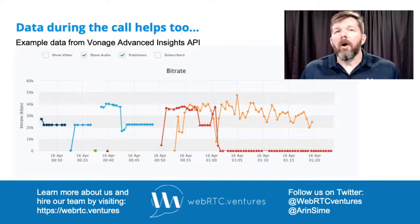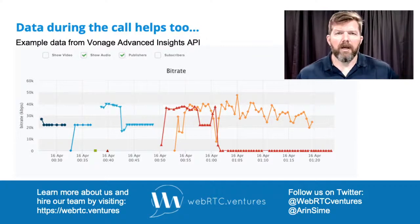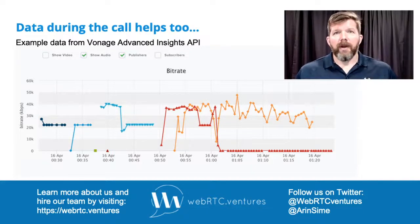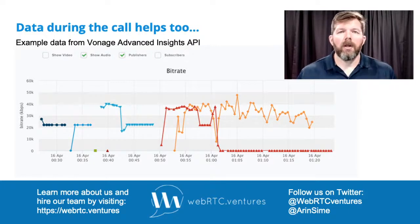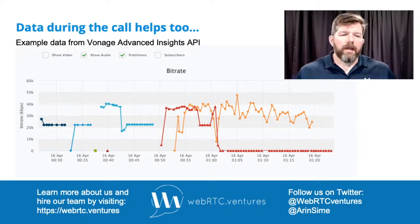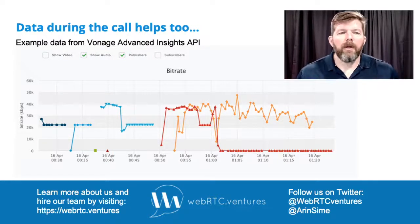Even once they're in the call you may want to gather some other statistics. This screenshot is from the Vonage Advanced Insights API, which I discussed in one of our other WebRTC tips. A number of CPaaS providers have APIs like this that give you information about what happens during the call, or you can look at services like CallStats to integrate this into your call. Storing information about the call as it happens in real time can also help with customer service situations afterwards.